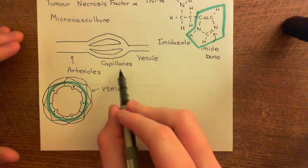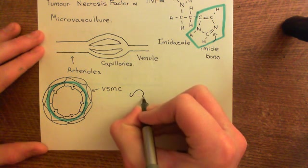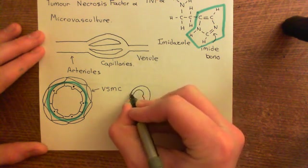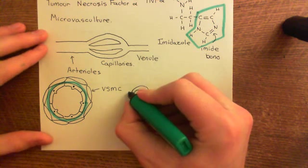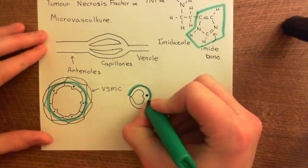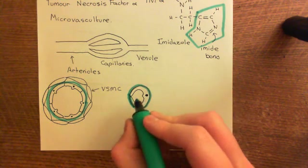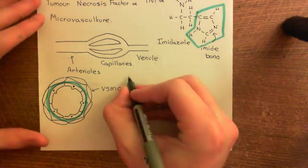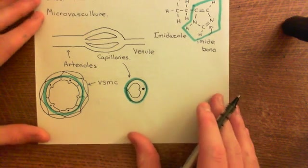Now let's look at the structure of a capillary. Capillaries are tiny little blood vessels — they only need a single endothelial cell to make up their complete endothelial circumference. They're around one cell thick, so one red blood cell will be able to squish its way through, and that's about it. Capillaries have nothing outside of the basement membrane — no smooth muscle cells or anything like that.